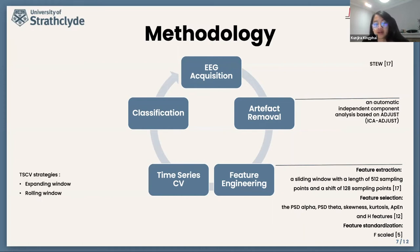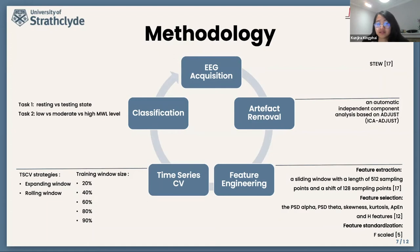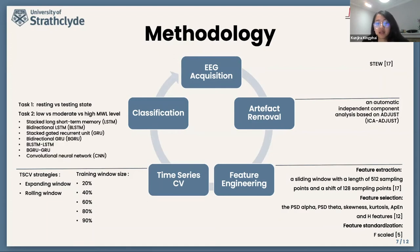We employed a 5-fold time-series cross-validation in our model evaluation steps. We investigated the effects of both the expanding and rolling window strategies, as well as the effects of different training window sizes. In this study, we performed the classification in two tasks: Task 1 is resting versus working state, and Task 2 is low versus moderate versus high mental workload level, using seven deep learning models.